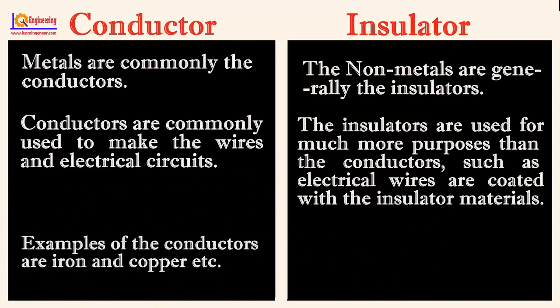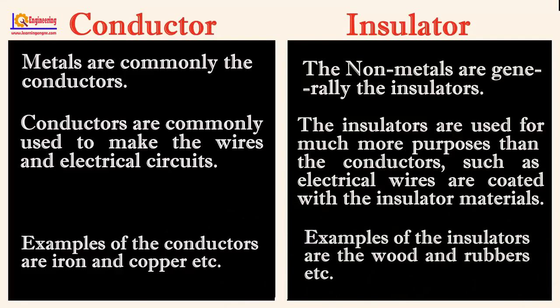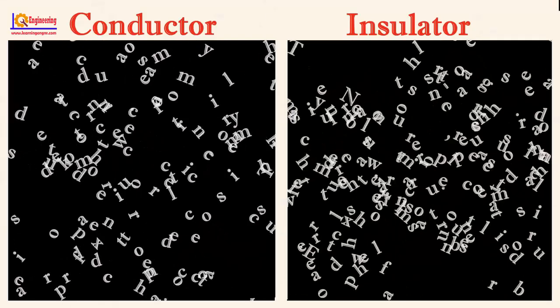Examples of conductors are iron and copper, etc. While examples of insulators are wood and rubber, etc.